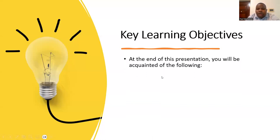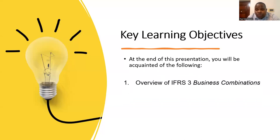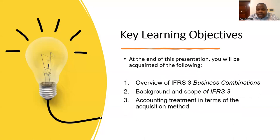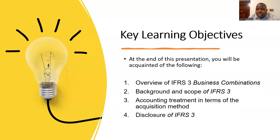Number one, we're going to see an overview of business combination, followed by the background and scope of IFRS 3, then we're going to see the accounting treatment in terms of the acquisition method, and later we're going to see the disclosures, if time allows.